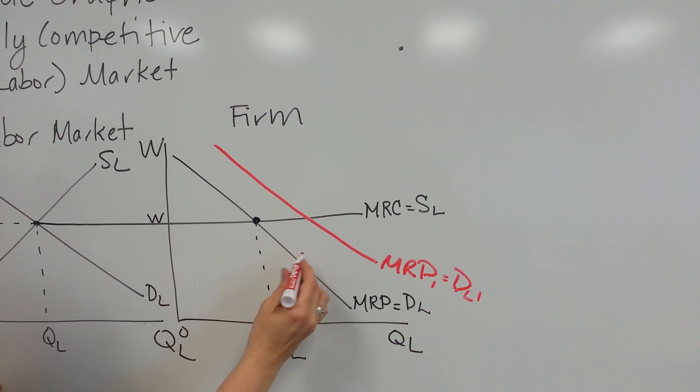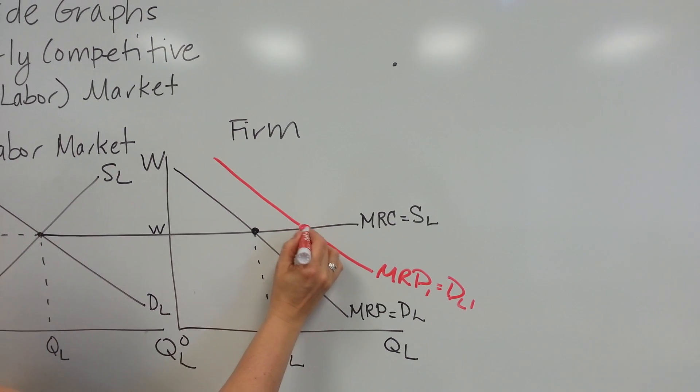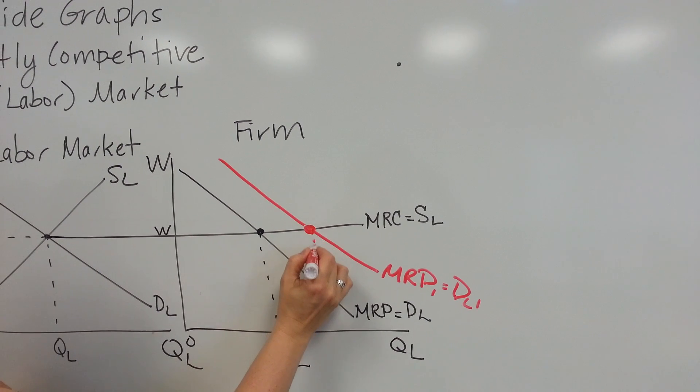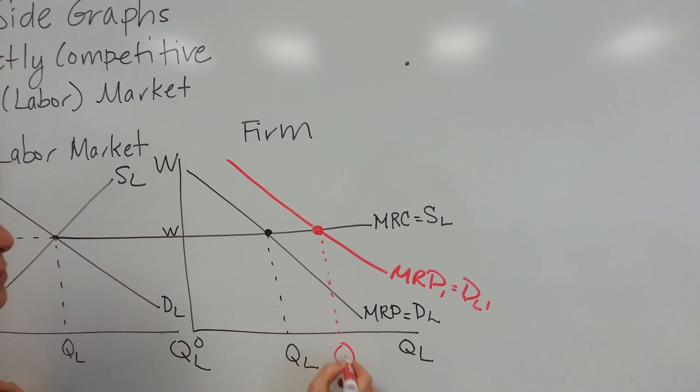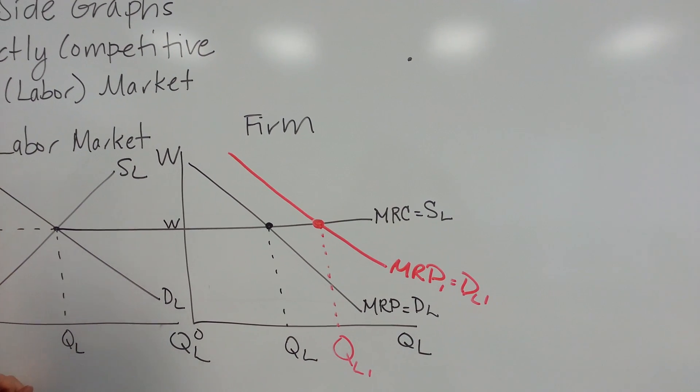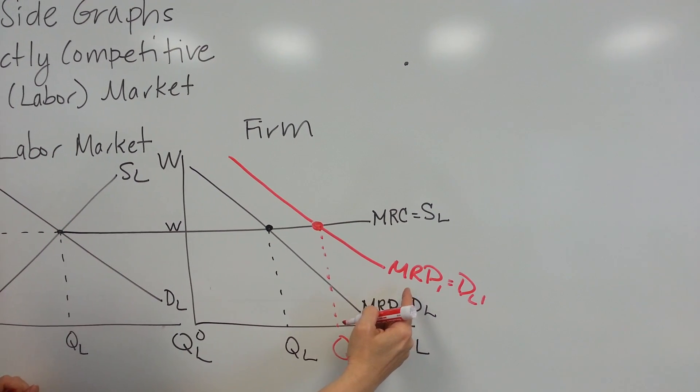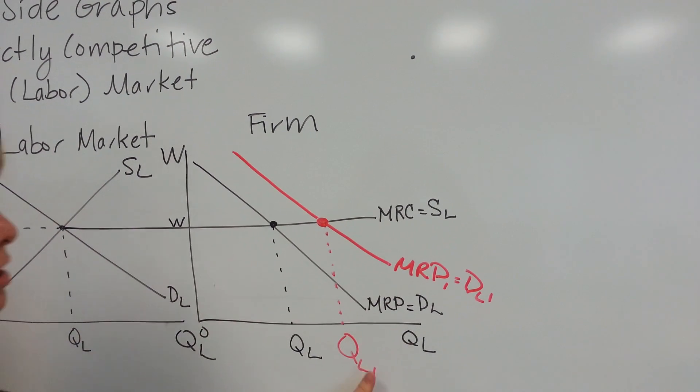And since I have a new curve, it makes a new profit maximizing point, and that will show me that I am now able to hire more workers. So an increase in MRP means I can hire more workers.